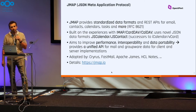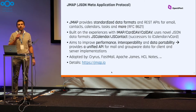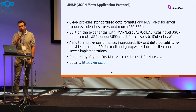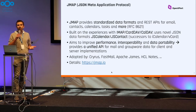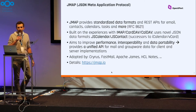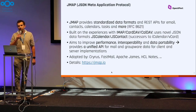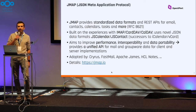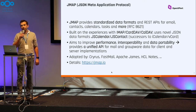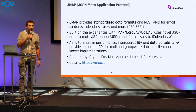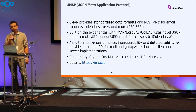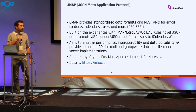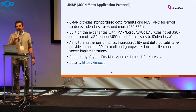JSON Meta Application Protocol. It provides standardized data formats and REST APIs for several things like email, contacts, calendars, tasks, and many more. It's described in an RFC and builds on experience with well-known protocols like IMAP, but also uses novel JSON data formats like JSCalendar and JSContacts, which are the successors of iCalendar and vCard.